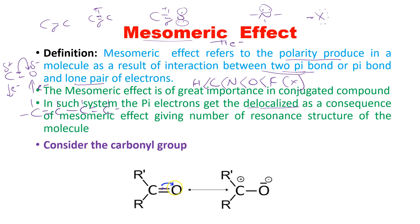The electron pair shifts onto oxygen — the arrow indicates that the electron pair is shifting to oxygen. Carbon now has a positive charge and oxygen has a negative charge. Polarity is produced due to interaction of the pi bond and the lone pair of electrons on oxygen. Oxygen goes from two to three lone pairs, making it negatively charged. These are the two resonance structures, shown by a double-headed arrow.